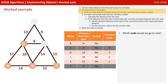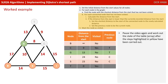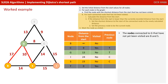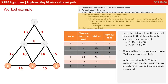Node G would be next as it has the shortest distance from start of all remaining unvisited nodes at 13. The nodes connected to G that have not yet been visited are B and S. G's distance of 13 plus the edge weightings gives 30 for B and 23 for S. 30 is less than infinity so we update node B. But for node S, 23 equals the value already recorded, so no update required.